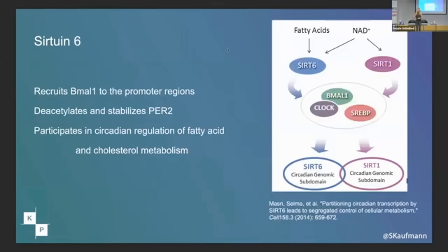Sirtuin 6 — we used to think it didn't do a whole lot, but sirtuin 6 is huge in your DNA repair mechanism system, which is how I got into all of this in the first place. What does it do? It brings BMAL1 to the E-box, which is crucial. If you don't have that, the whole system falls apart. It also stabilizes the negative feedback loop via PER2, and it controls all of your fatty acid and cholesterol metabolism.